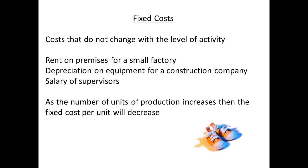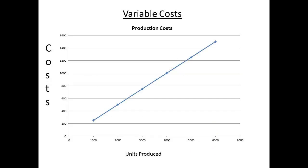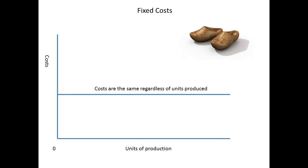Fixed costs are those costs that will not change with the level of activity. For a small factory, these might include the rent payable on the premises, since this will remain the same regardless of the number of units produced. As the number of units produced increases, the fixed cost per unit will decrease. For variable costs, a graph of costs against units of production will produce a line where the slope remains the same and gives the unit cost. For fixed costs, the line is parallel to the horizontal axis, showing fixed costs remain the same regardless of output.